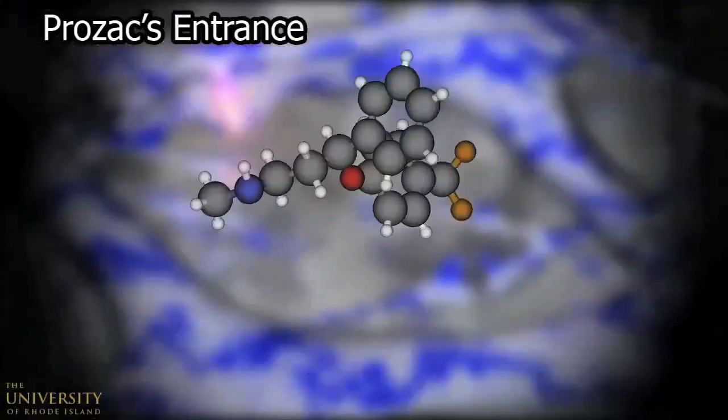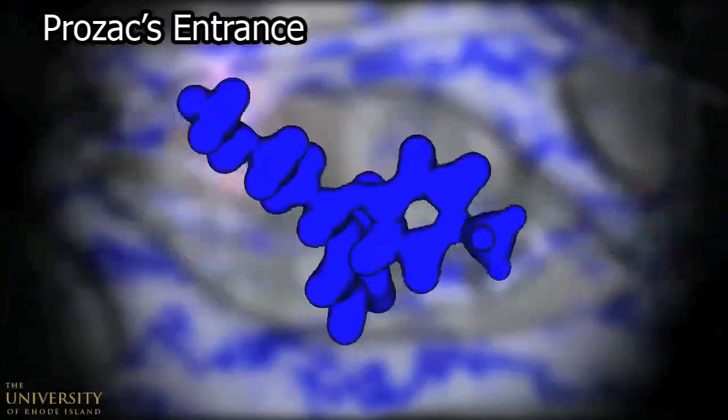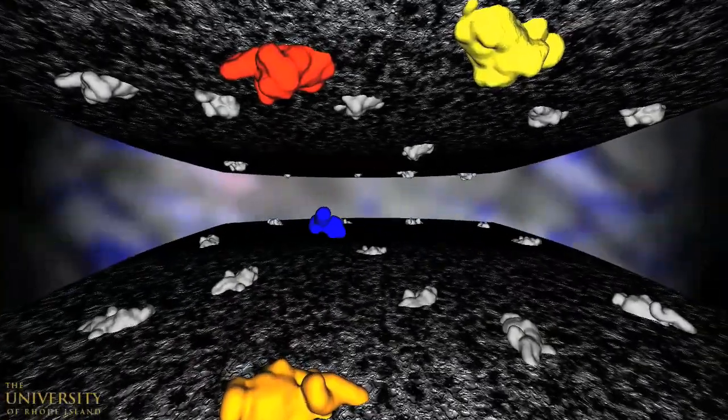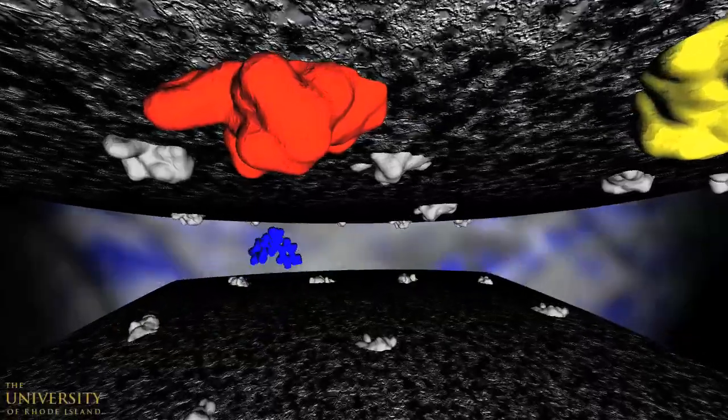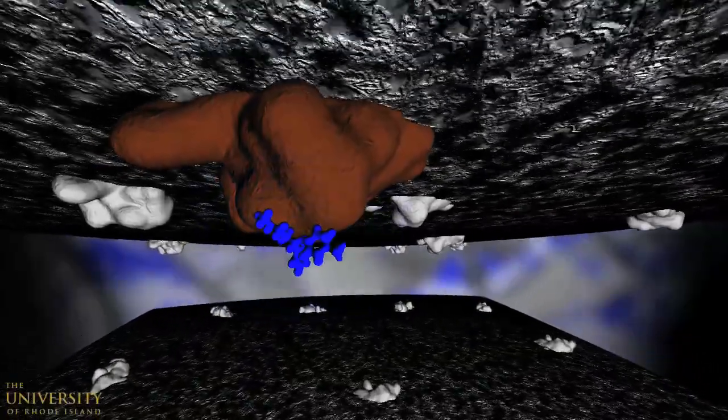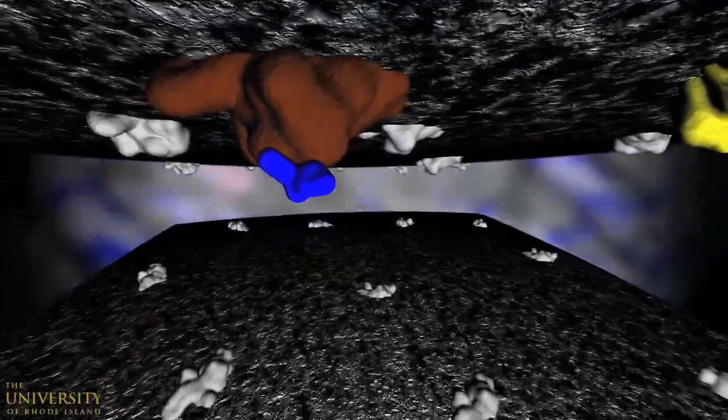This is Prozac, a small chiral molecule. Once Prozac locates and binds to the presynaptic reuptake protein, the protein's gating mechanism is disabled and no longer able to transport serotonin.